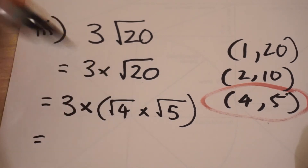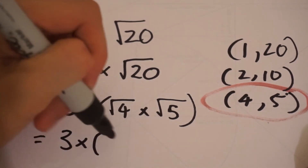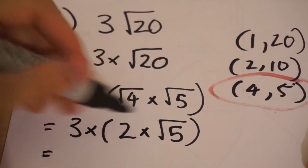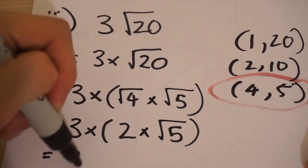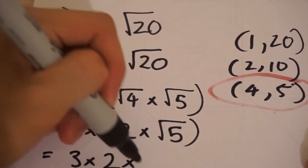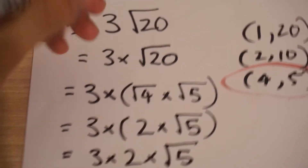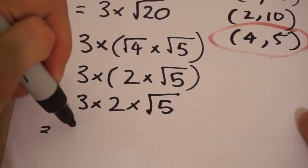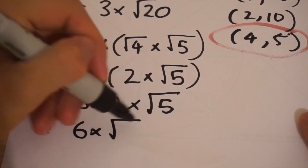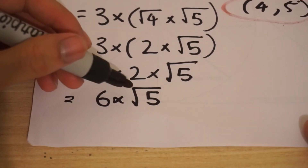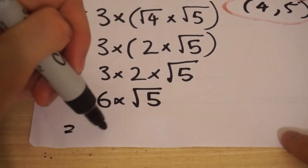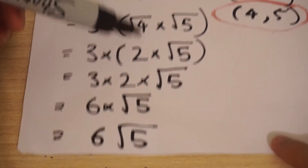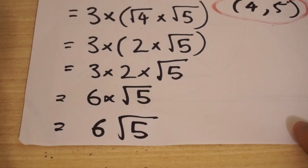Simplifying that, the square root of 4 equals 2. Multiplying the brackets out, 3 times 2 is 6, and 6 multiplied by the square root of 5 equals 6√5. Again, we've reduced the number inside the square root to as small as possible.